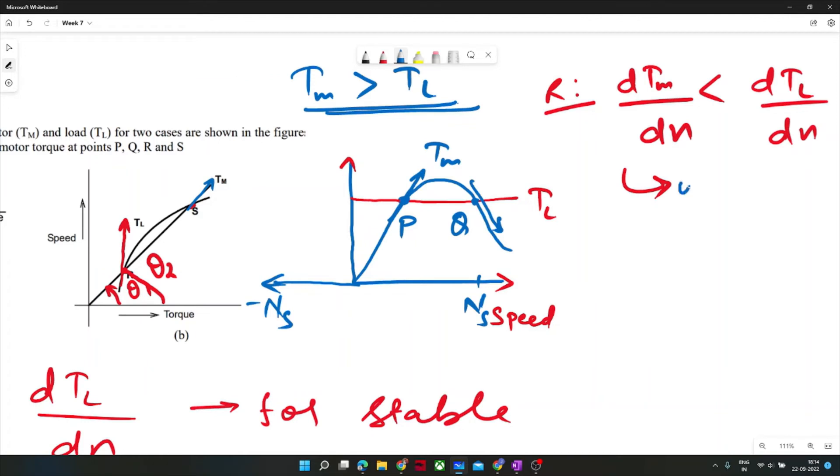It would be unstable. At S, the reverse is happening. dTL/dn is less than dTm/dn.